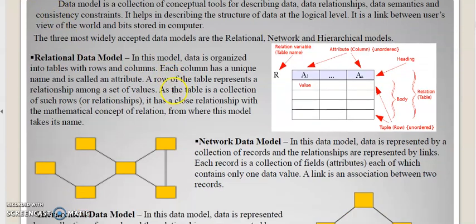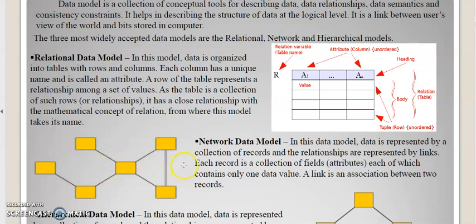Similarly, we have a network data model. In this type of model, data is represented by a collection of records, and the relationships are represented by links. Each record is a collection of fields called attributes, each of which contains only one data value. A link is an association between two records.